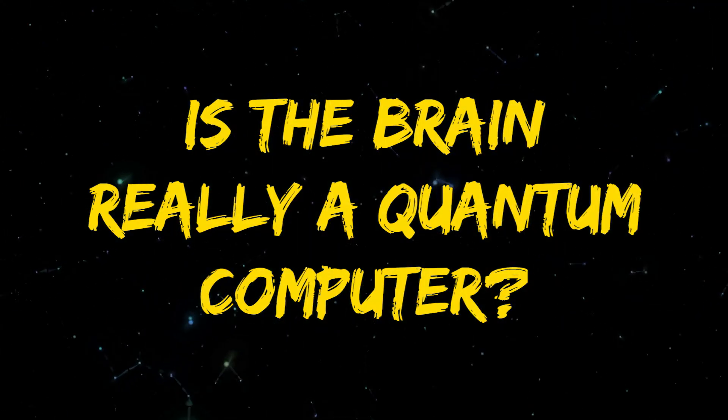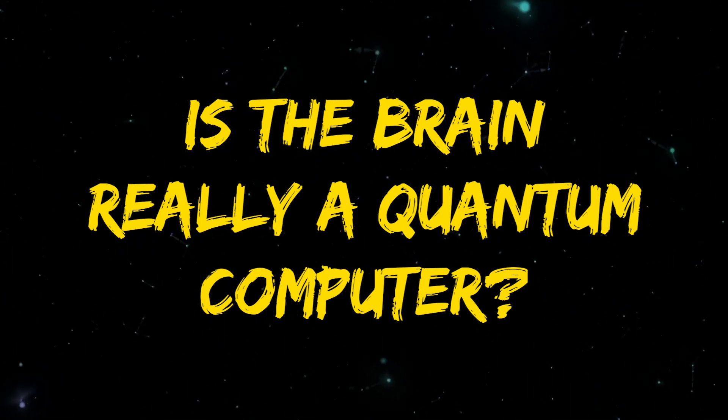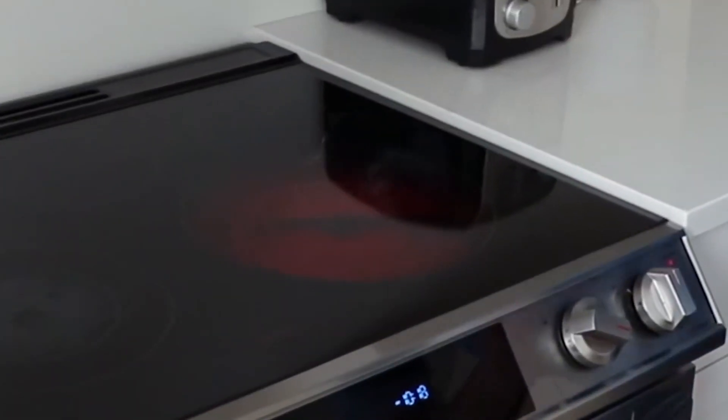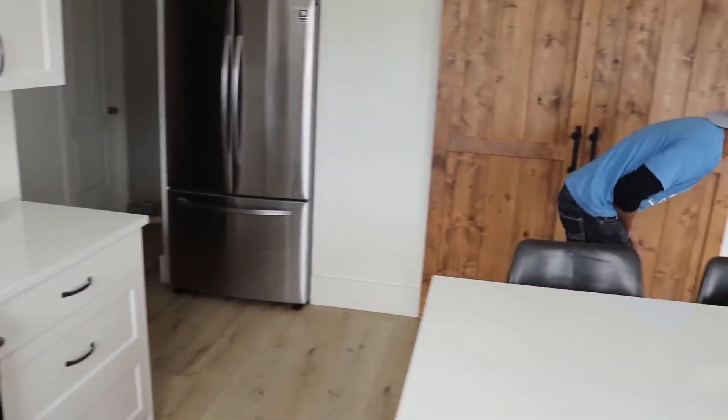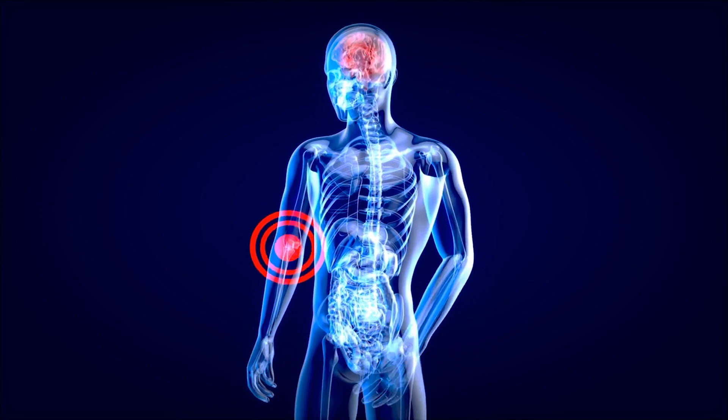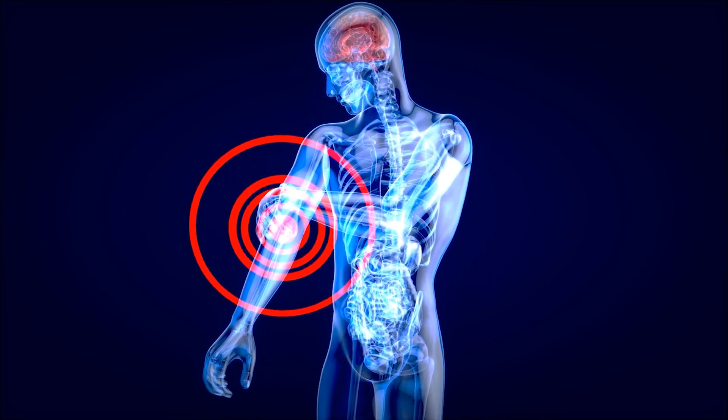Is the brain really a quantum computer? Imagine this scenario: you accidentally place your hand on a hot stove. In barely milliseconds, your pain receptors and thermoreceptors in that region of your body register the scorching sensation and send this alarming information to your brain.